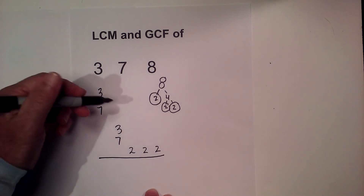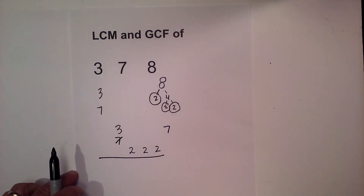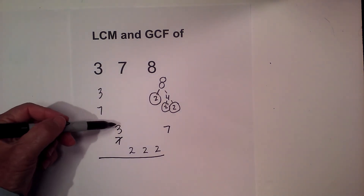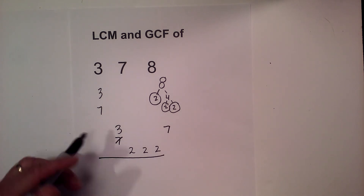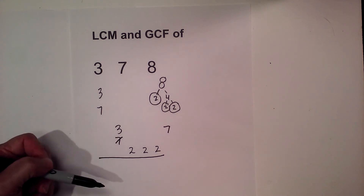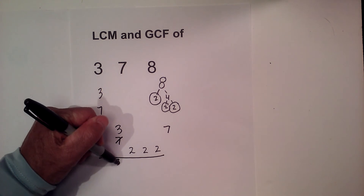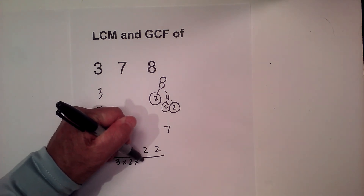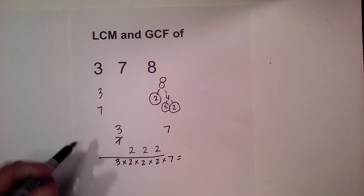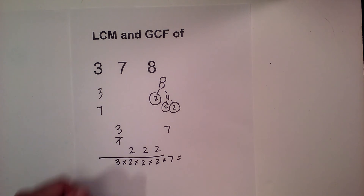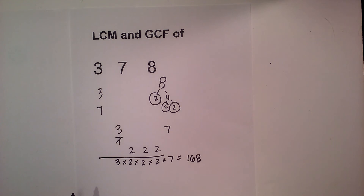For the least common multiple, you multiply all the factors together. There's one exception: if you have a pair, you only multiply it once. But there are no pairs here, so I multiply three times two times two times two times seven, and when you multiply all this together you get one hundred sixty-eight.